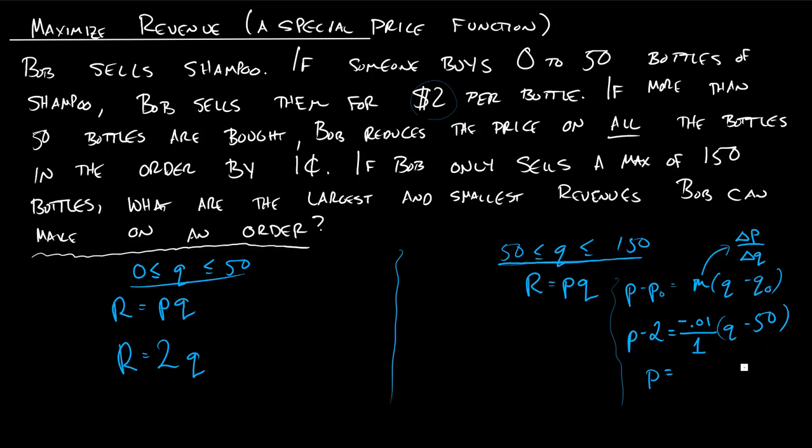It's going to be equal to negative 0.01 times the number of shampoo bottles that he sells plus 2.5. Not pretty, right? This is some crazy thing we have to do off on the side. But at the end, we're able to get our revenue function like we were before. So revenue, rather than being 2 times quantity, this is my price, my negative 0.01Q plus 2.5, and then all of that is times quantity. I could simplify that a little bit, multiply it out, and get this.